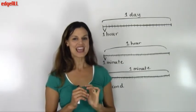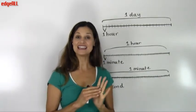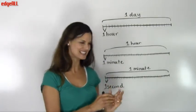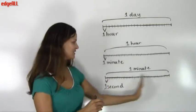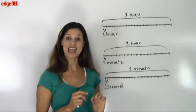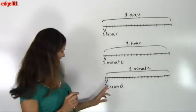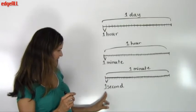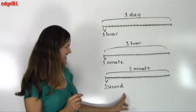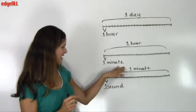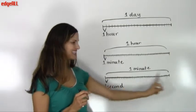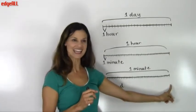Similarly, if you divide the length of one minute into sixty equal sections, the length of each section represents one second. One minute is equal to sixty seconds.